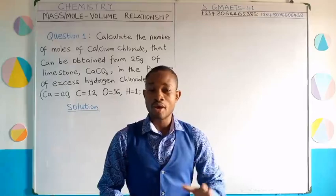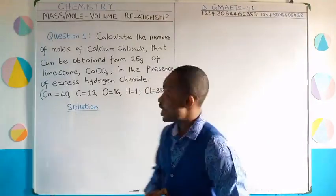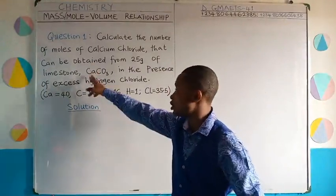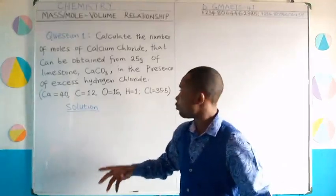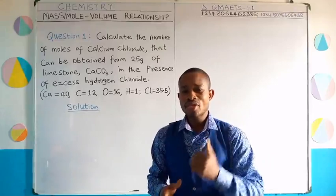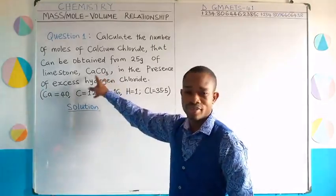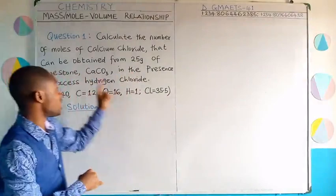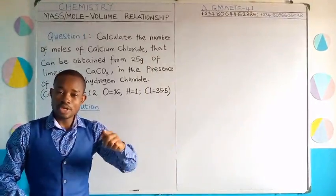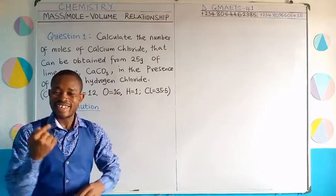I will be teaching you calculations on the mass-mole-volume relationship — that is stoichiometry of a reaction. The first question: calculate the number of moles of calcium chloride that can be obtained from 25 grams of limestone (CaCO₃) in the presence of excess hydrogen chloride. Limestone is calcium carbonate. We have business with calcium carbonate (limestone) and with calcium chloride. It is the number of moles of calcium chloride that we have to calculate.